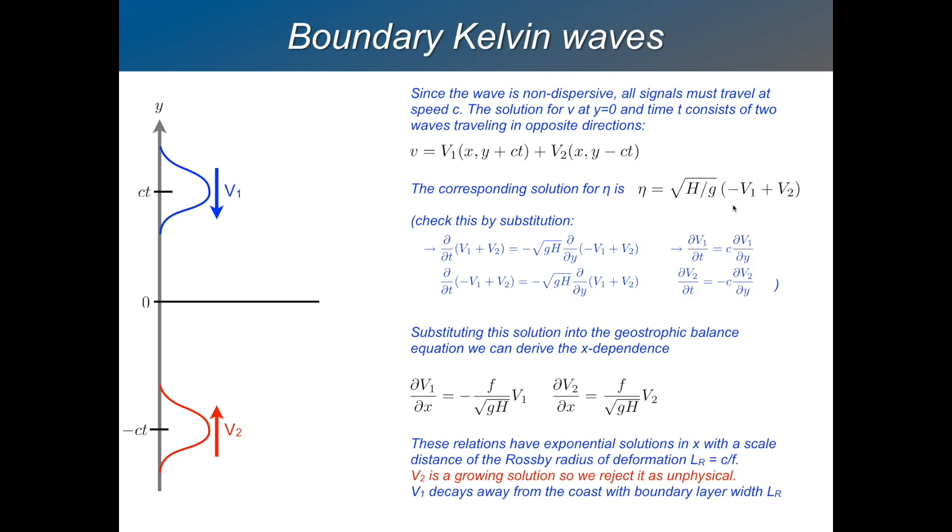The corresponding solution for eta is this. It's a coefficient times minus V1 plus V2. And you can prove that by substitution. So if you take these expressions for V and eta, substitute them back into the equations, you'll see that what you get is just advection of V1 and V2. Southward advection for V1, northward advection for V2. So that proves that this is the right expression for eta.